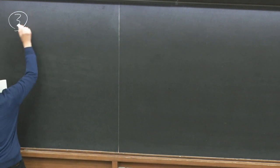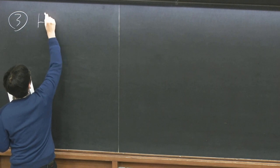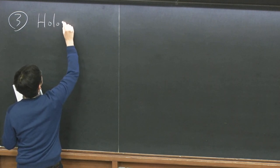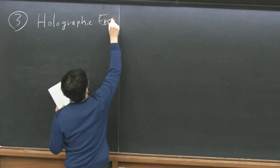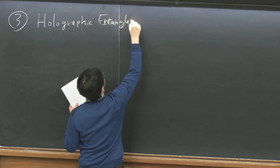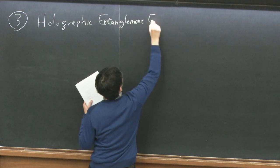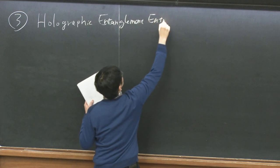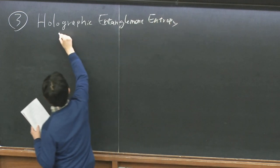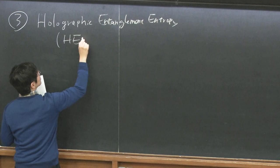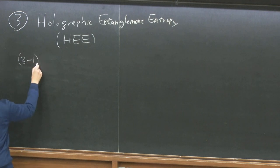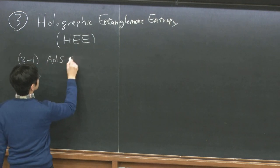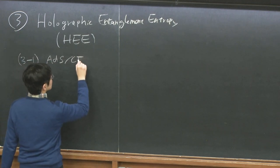This is section three, the holographic entanglement entropy — we simply call it HEE, holographic entanglement entropy. But before that, I just want to give some short summary of ADS-CFT because that's quite useful for my second lecture today, so we want to specify a basic coordinate system.